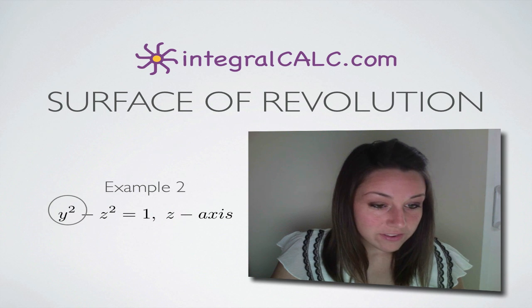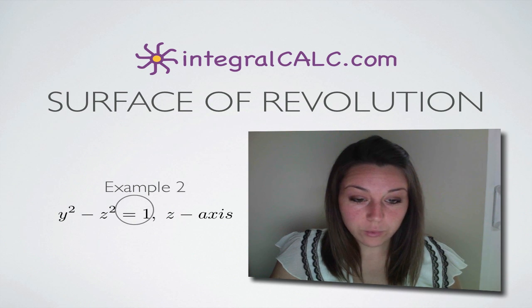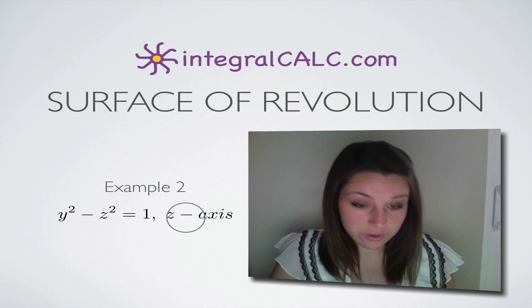The function that we're given is y squared minus z squared equals one, and they've asked us to rotate around the z-axis.